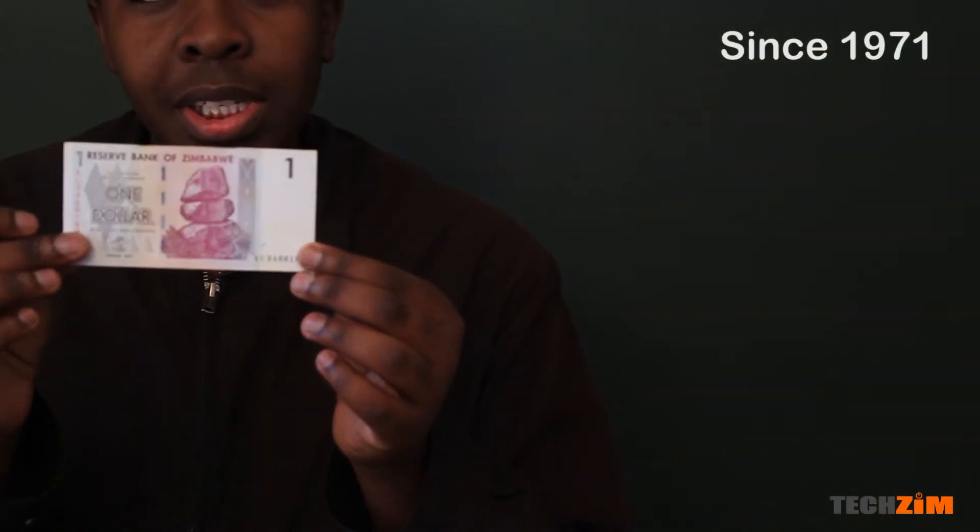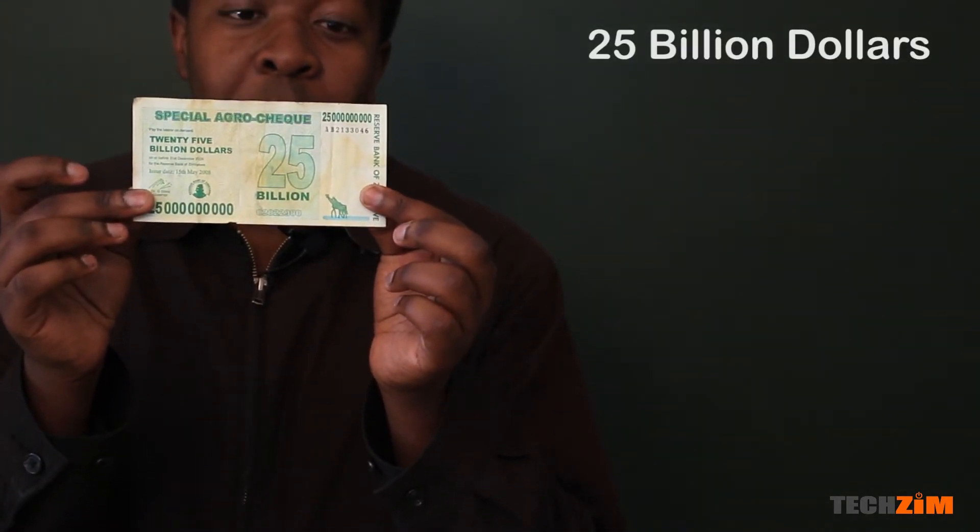People started using it in the country, but then at one point the Zim dollar started to get printed more and the numbers started to increase up to 25 billion dollars. So people gave value to this paper because they trusted the government, but the problem is the government ended up printing more.